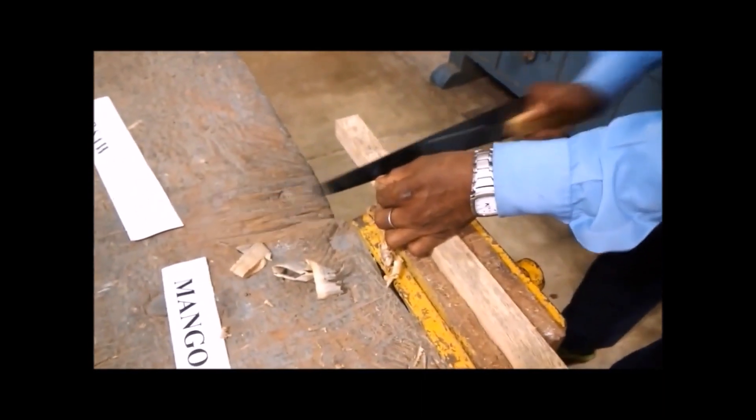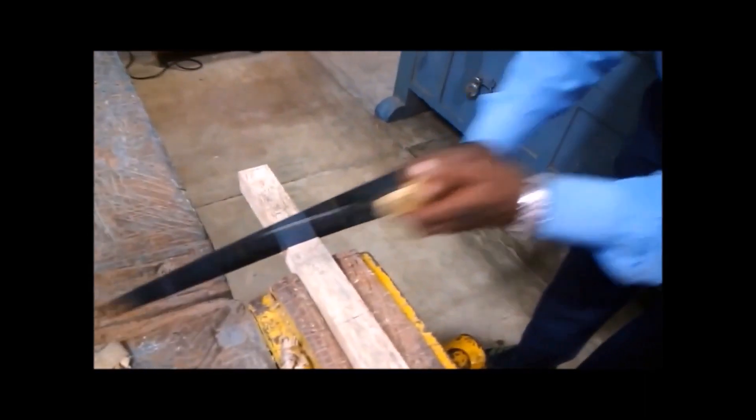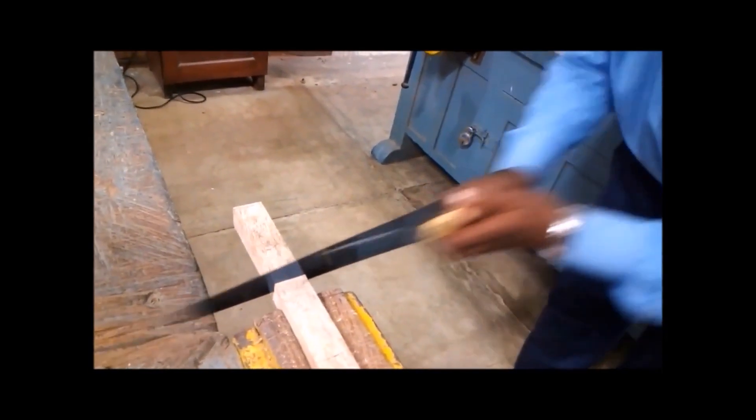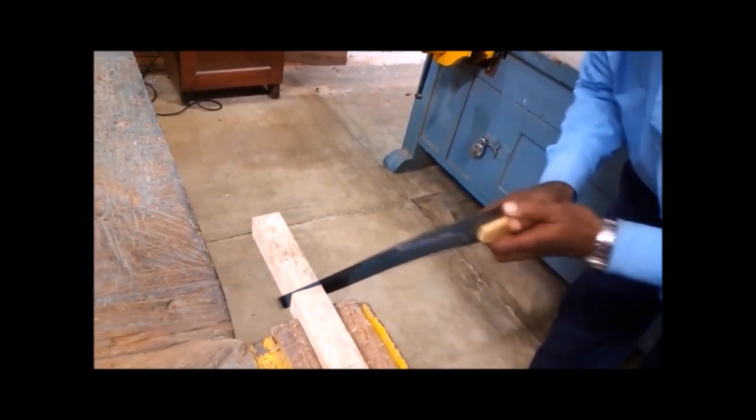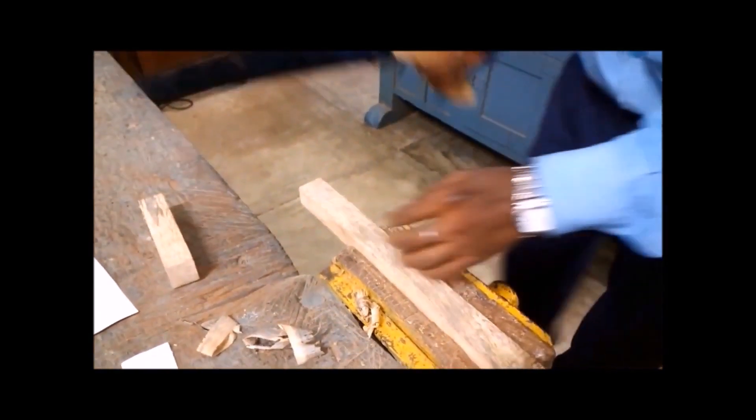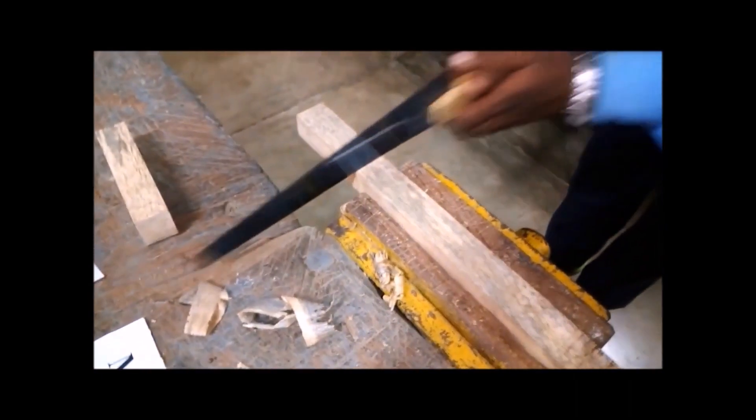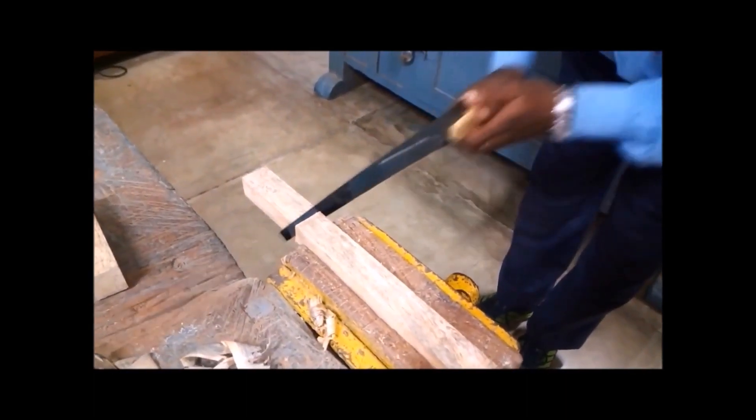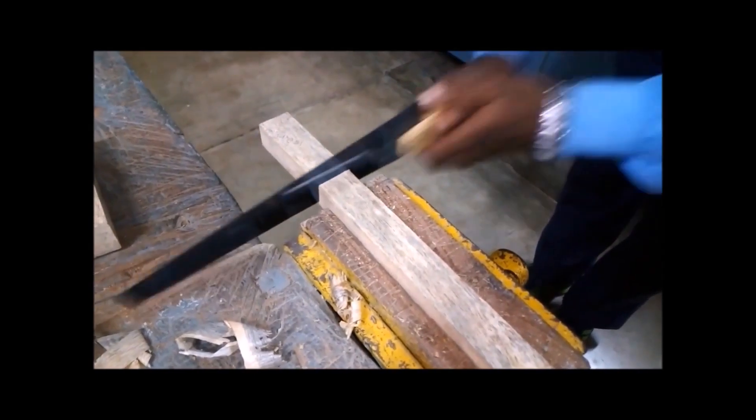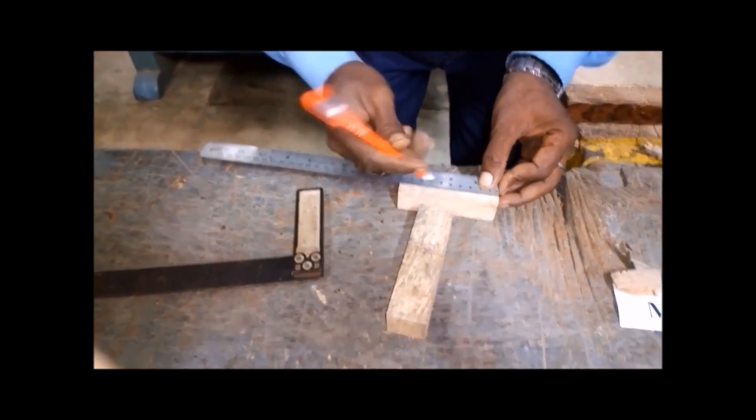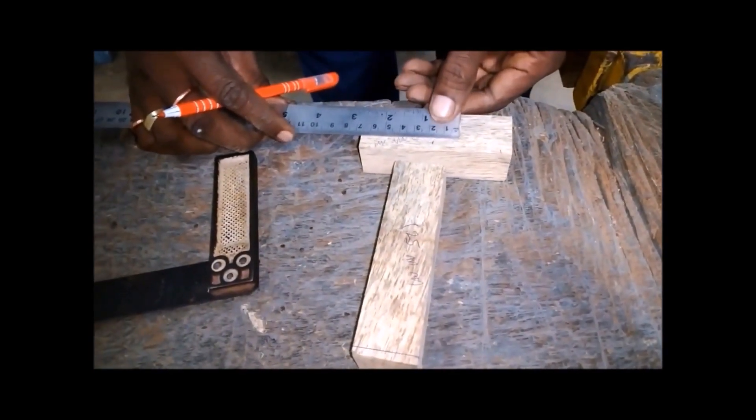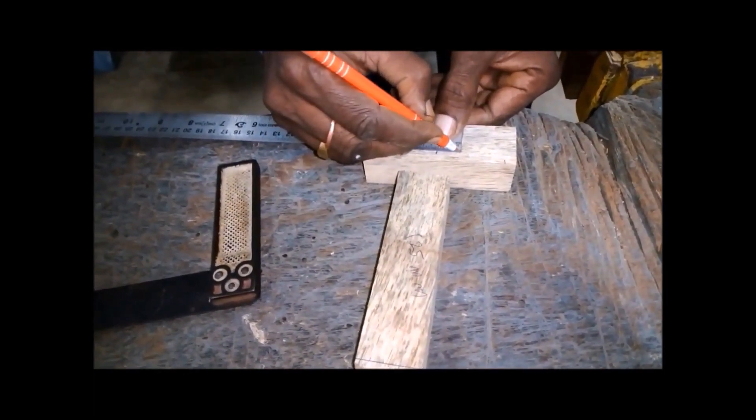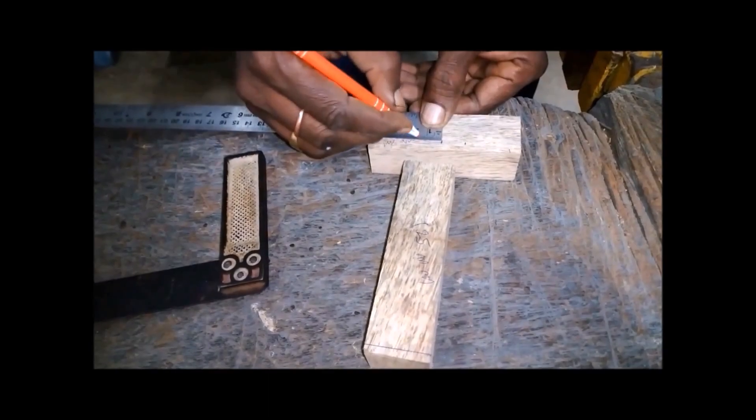Now we are going to separate these two parts from the job with the help of ripsaw. Now 100 mm length piece tenon member is marking for the position of the joint.